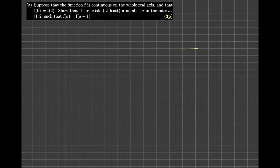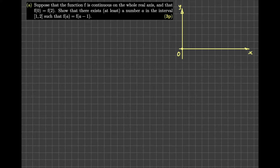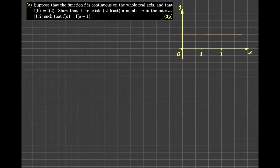Let me draw my x-axis and y-axis. The numbers involved are 0, 1, and 2, so let me highlight them on the x-axis. The function f is continuous, so its graph can be drawn with one pen stroke. There is another condition: the height of the graph at points 0 and 2 must be the same. So assume f at 0 and f at 2 are both at this same height.